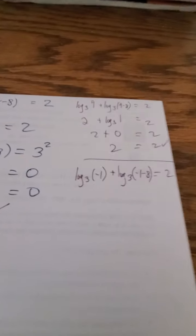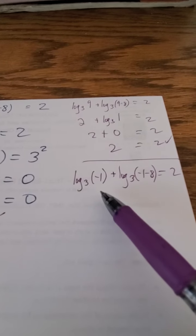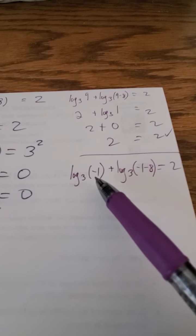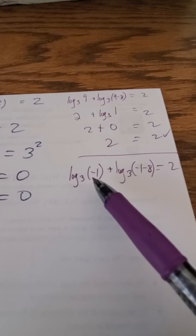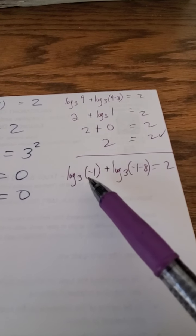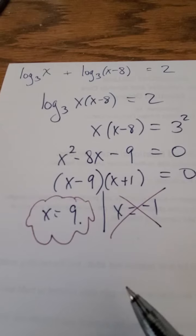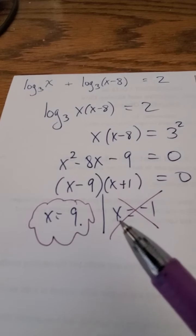However, when I plug in x equals negative 1, my other solution, I get the log base 3 of negative 1. Well, guess what? We have to stop it right here because there's no such thing as a log of negative 1, because negative 1 can never go into negative 1. Negative numbers are never part of the domain of the log function. Therefore, we have to reject the possibility of x equals negative 1, and my only solution is x equals 9.